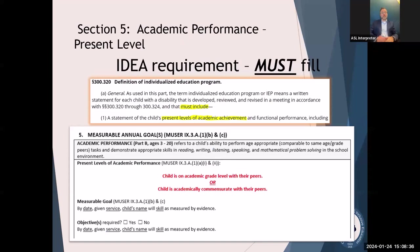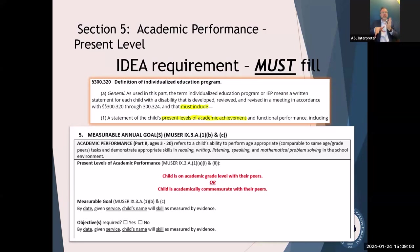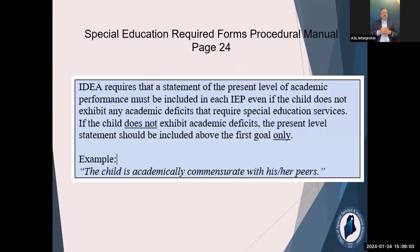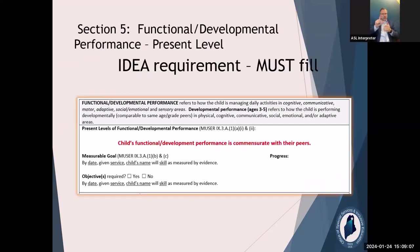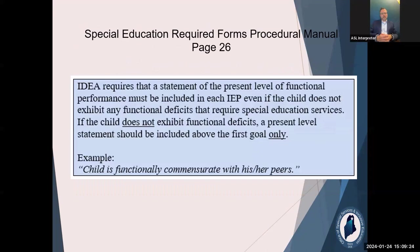Present level — academic present level — is a must-fill. If you have a student that doesn't have any academic gaps and only has functional gaps, put some statement in that very first present level associated with the first goal indicating they're on par with peers or at grade level. There has to be some kind of statement in that very first present level. The procedural manual talks about this on page 24. The same applies for functional — if a student only has academic gaps, put a statement in the functional present level that they're on par with peers. The procedural manual covers this on page 26.